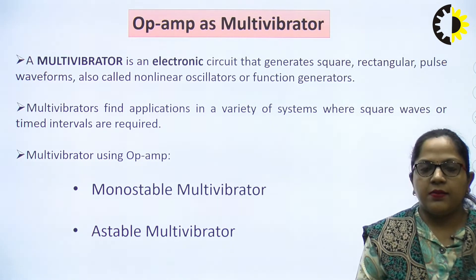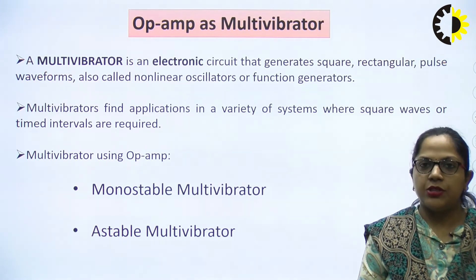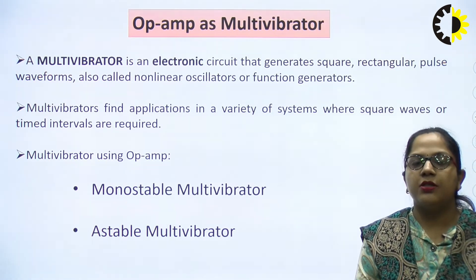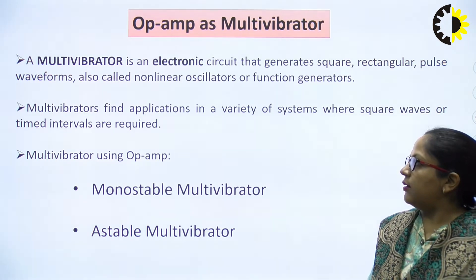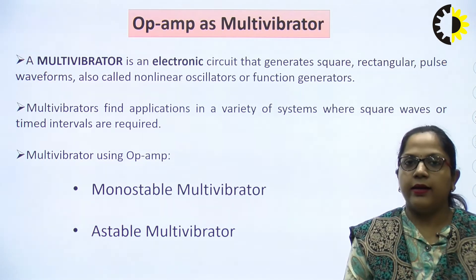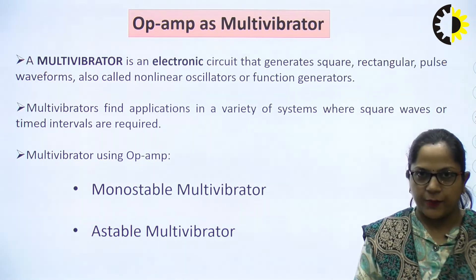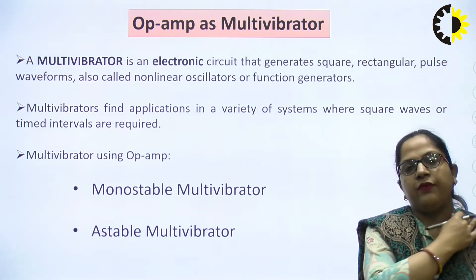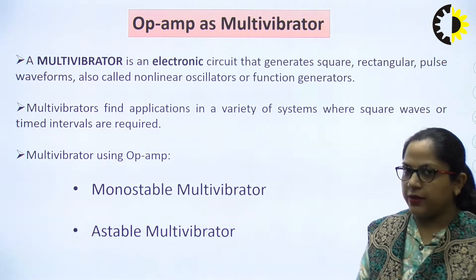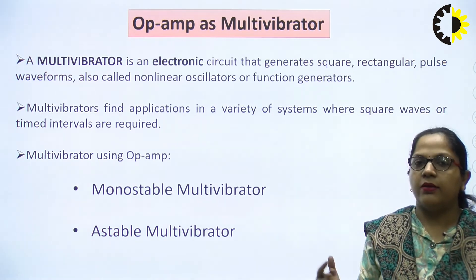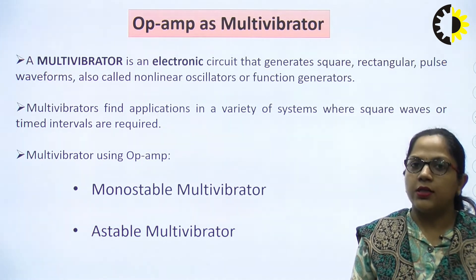We can realize many applications with the help of operational amplifier — linear applications as well as non-linear applications. Though op-amp is an analog linear IC, we can also realize non-linear applications with it. One of the non-linear applications we can realize with op-amp is multivibrator. Multivibrator is actually a name given to the family of non-linear oscillators.